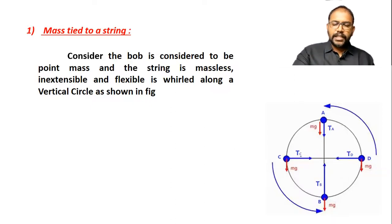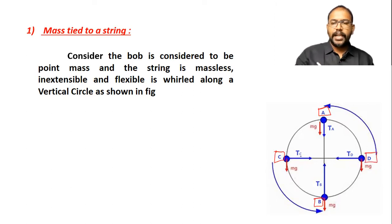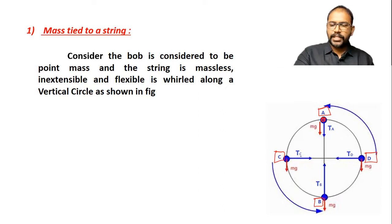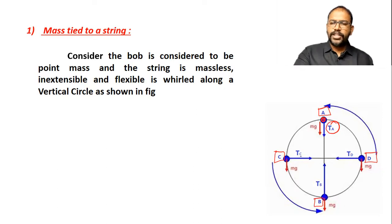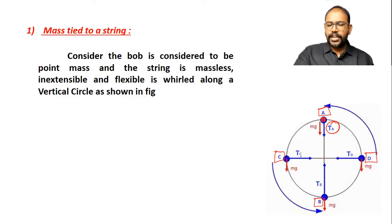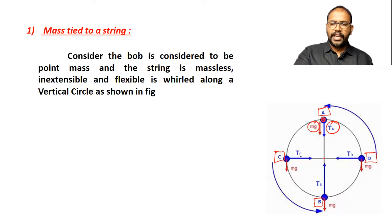At different points, I consider the highest point by A, lowest point by B, and the midpoint by C and D. Now at point A, at the highest point, you can see there is tension. Tension is along the string and toward the center. This is the tension at A, and the weight at A — weight of the object at A — is downward.